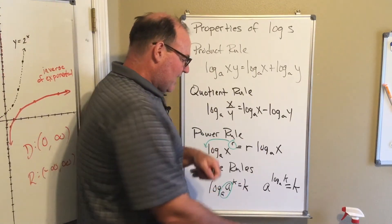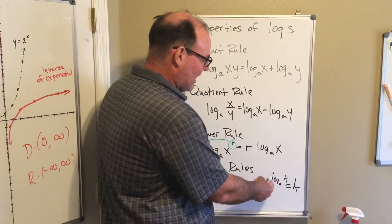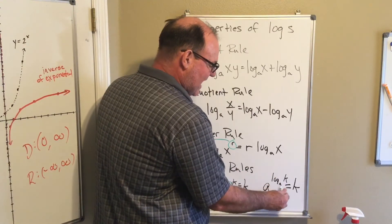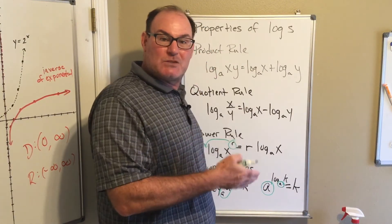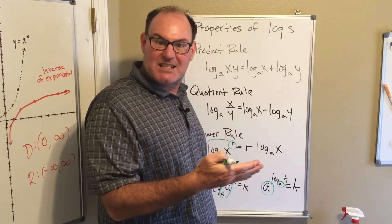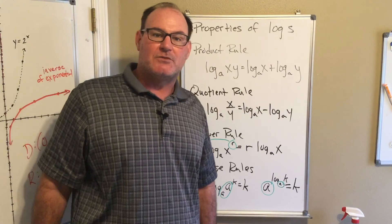And vice versa, if I have the exponential base a and in the exponent I have log base a of k, again, these bases have to be the same. And as long as the bases are the same, the exponential and the logarithm cancel each other out and you're just left with k. Those are the properties of logarithms.